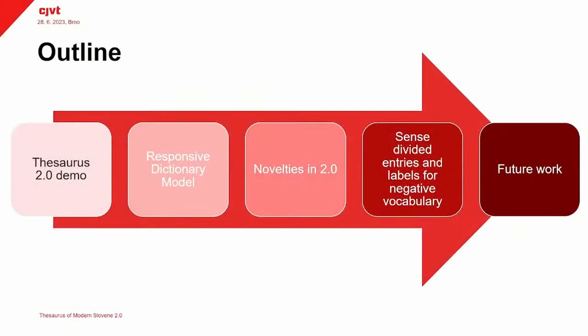Then I will present the features of the responsive dictionary model. I will present the novelties we have in thesaurus 2.0, and after that I will focus a little bit more on two activities that were maybe the most lexicographic in their nature: the preparation of sense-divided entries and the labeling of negative vocabulary in the dictionary. Then I will conclude with some plans for future work, which in our case is of course thesaurus 3.0.